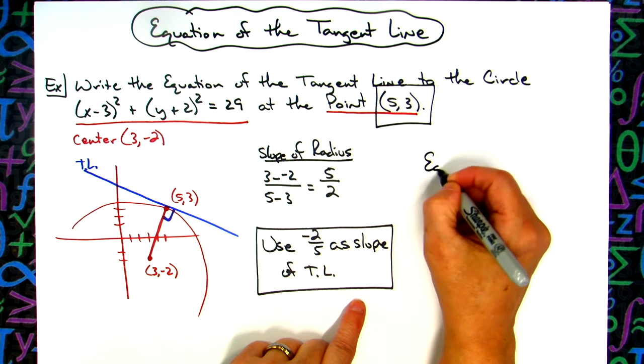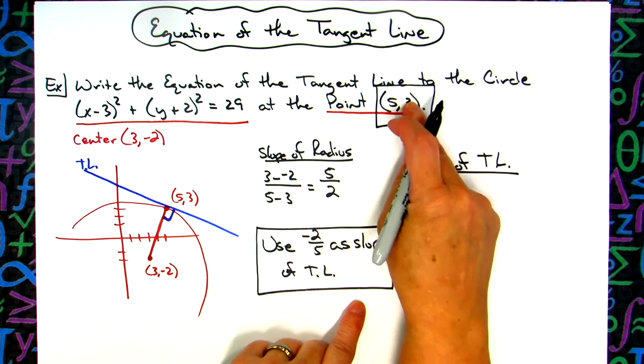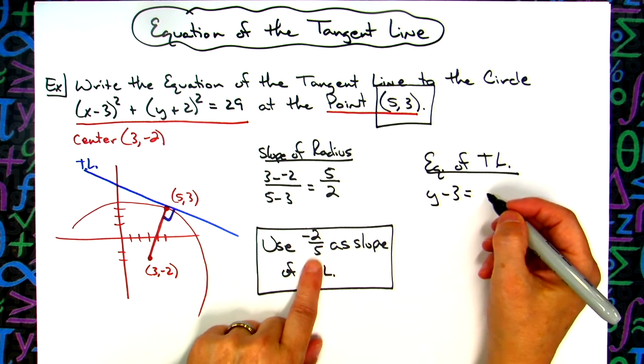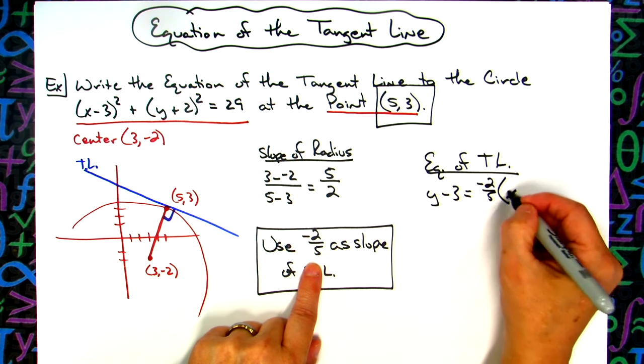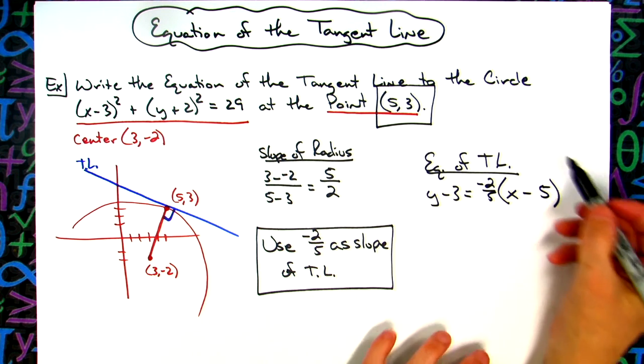So the equation of my tangent line is going to be y minus three, opposite of those points up there, using that negative reciprocal slope, negative two-fifths, and then x, opposite of this point right here, minus five.